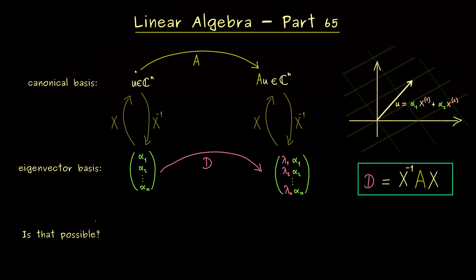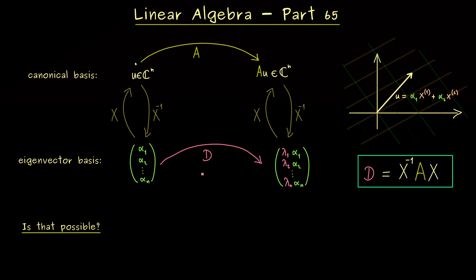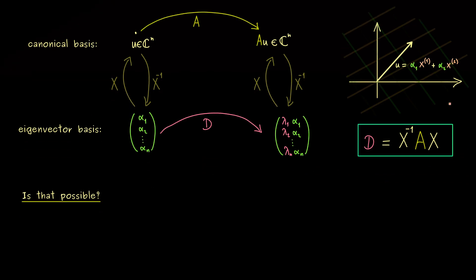But now you see, the question that arises for this picture here is, is that even possible? Or more precisely, for a given square matrix A, can we always find such a matrix X and a matrix D such that this formula holds.